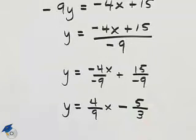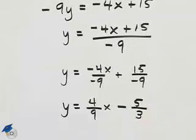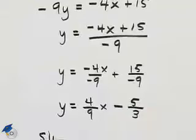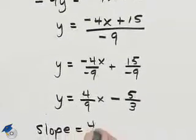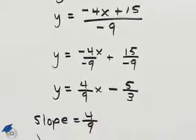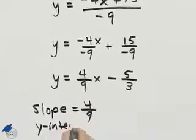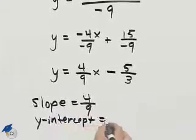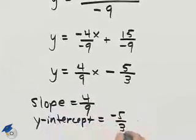Now that it's written in slope-intercept form, we can determine that our slope is 4 ninths and our y-intercept is negative 5 thirds.